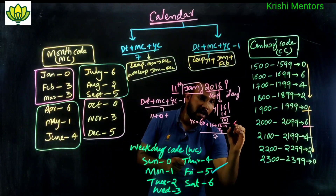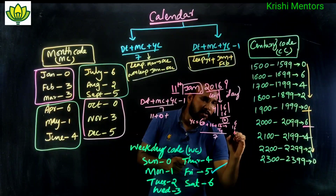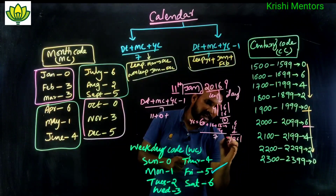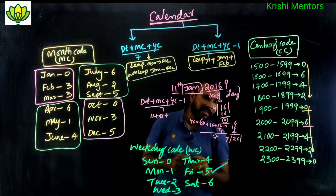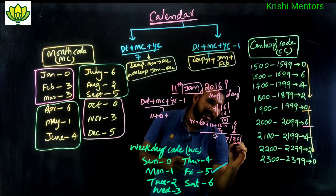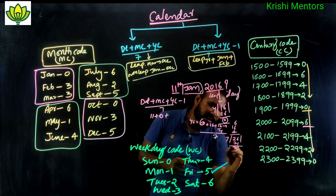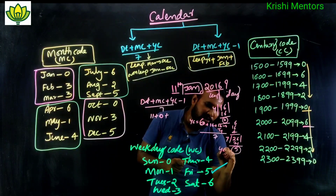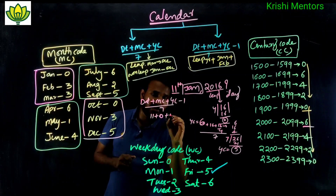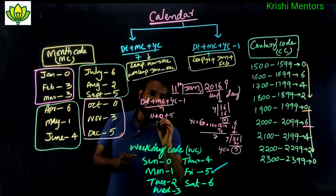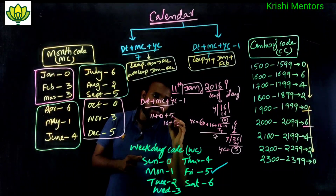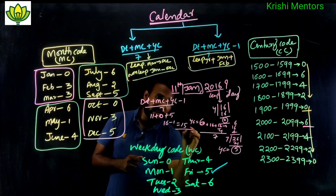26 divided by 7: 7 times 3 = 21, so quotient = 3, remainder = 5. Year code = 5. Now applying the formula: date 11 + month code 0 (January) + year code 5 = 16, minus 1 = 15. Then 15 divided by 7 gives remainder 1.